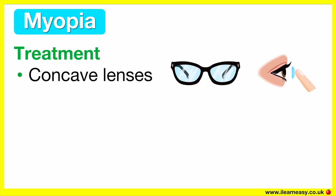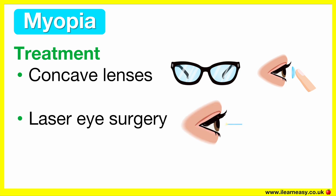The treatment for myopia is glasses or contact lenses. The lenses used are concave lenses, also known as minus lenses. Laser eye surgery or other vision correction surgery can also be an option. This reshapes the cornea to fix the way light enters the eye.